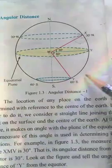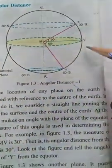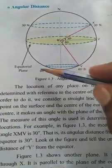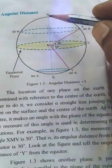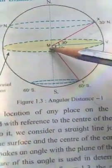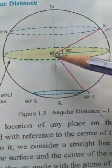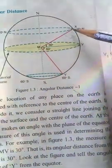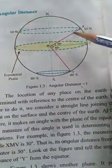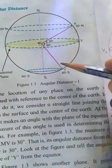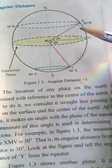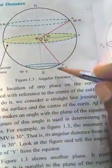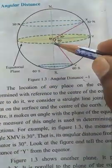The location of any place on the Earth's surface is determined with reference to the center of the Earth, labeled as M. In order to do this, we consider a straight line joining the points on the surface and the center of Earth. See how these points are joined with a straight line to the center of the Earth.